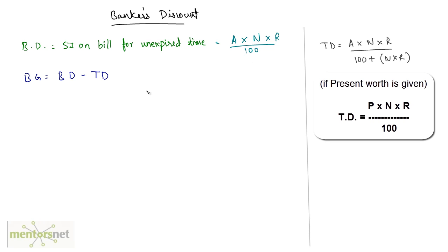If you put the formulas for calculating the banker's discount and the true discount in this formula for calculating the banker's gain, you'll get it as equal to the true discount squared divided by the principal worth, or the present worth of the amount.